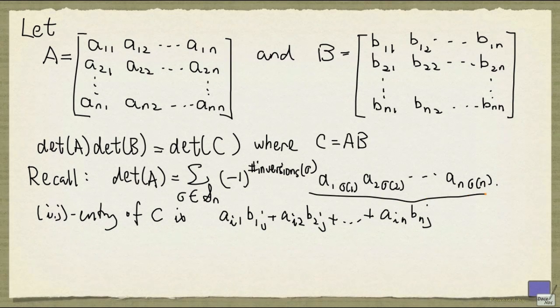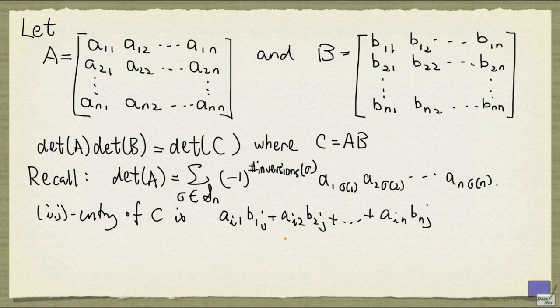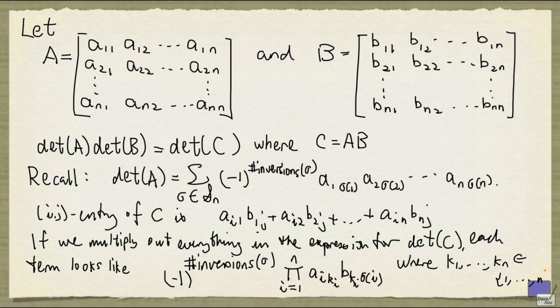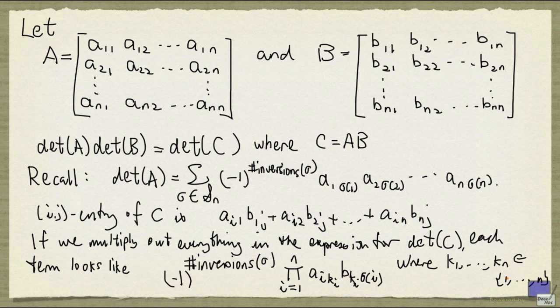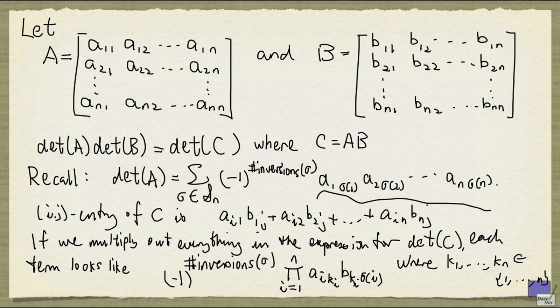Now if you look at each term here for C and expand the product, which involves n of these things, you'll get that all the terms look like the following. Each term is going to look like this, where k1 up to kn are elements from the set 1 up to n. Duplicates are allowed. So if you expand each of these terms in the expression for the determinant of C, you'll end up with n to the n terms.